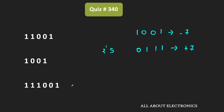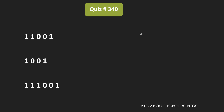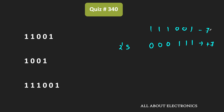Likewise, let us talk about the third number. This third number is 6-bit and the MSB is equal to 1, which indicates that the number is negative. So let us find the 2's complement of this 6-bit number. If we find the 2's complement of 111001, then it is equal to 000111, which once again corresponds to +7. That means the given number represents -7 in 2's complement form.